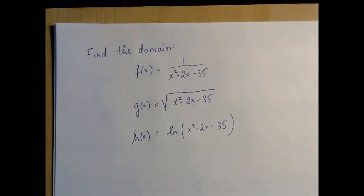There is not that many ways we can get undefined. The three ways we can get undefined are division by zero, negative under a square root or fourth root or sixth root and so on, even root, and negative or zero in a logarithm. And that's it. That's a pretty short list. And these three problems illustrate those three cases.